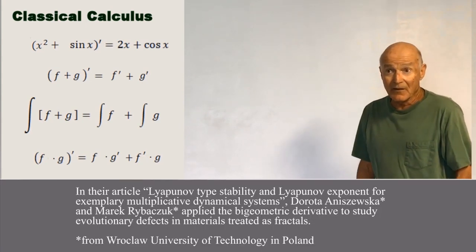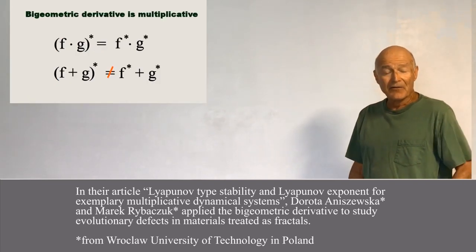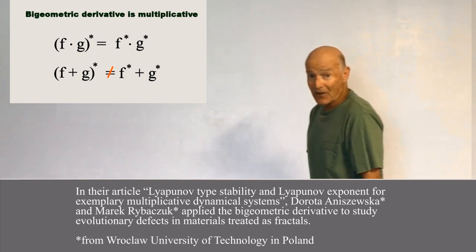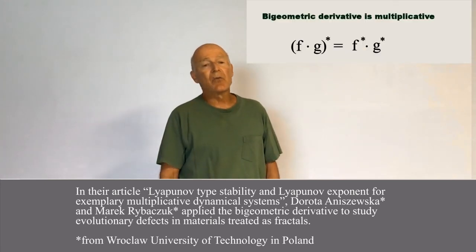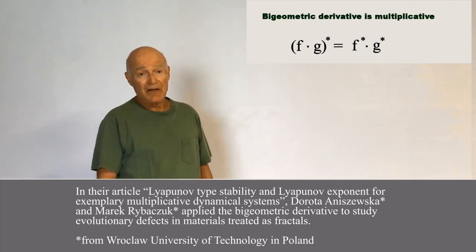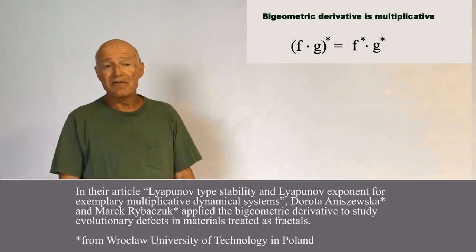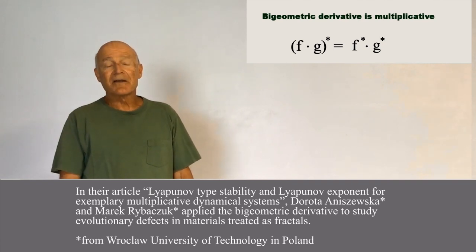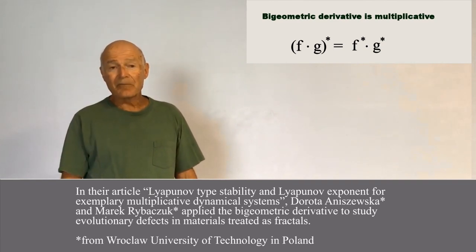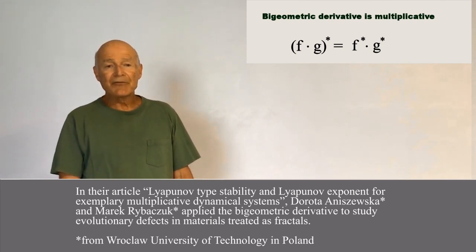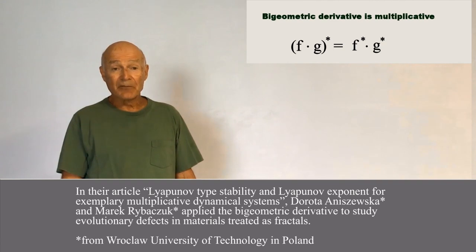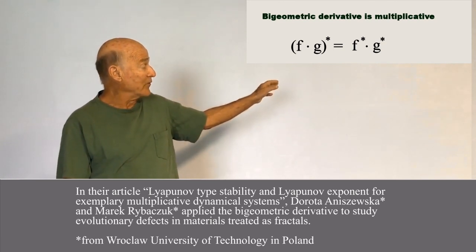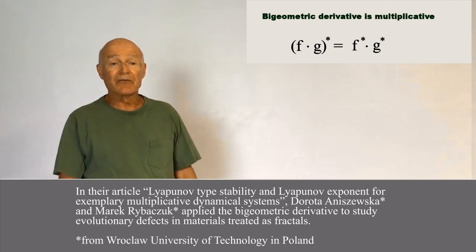So the classical calculus is sometimes called an additive system because its derivative and integral are both additive. What about the bi-geometric calculus? It's not additive. On the other hand, it's multiplicative. That's a really interesting feature that's quite different from classical calculus. It's a feature that's very important in certain applications of science and engineering. The bi-geometric derivative is multiplicative - the bi-geometric derivative of a product of two functions is the product of their bi-geometric derivatives.